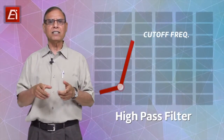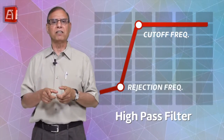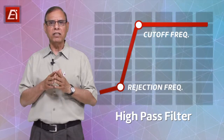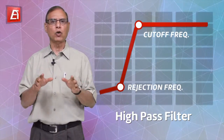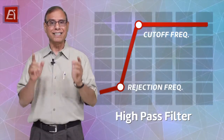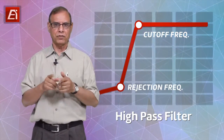Next comes the high pass filter. These filters reject signals below a specific cutoff frequency and let others above it pass without attenuation — so a high pass filter is exactly the opposite of a low pass filter. High pass filters can be useful to reject signals from other systems operating below your system's operating frequency.